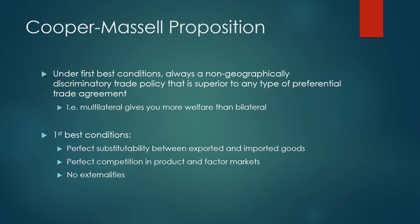Let's go into an official definition. Under first best conditions, always a non-geographically discriminatory trade policy is superior to any type of preferential trade agreement. Essentially, at its core, it's saying that multilateral gives you more welfare than bilateral or customs unions, and we're going to explain this in the diagram coming up.